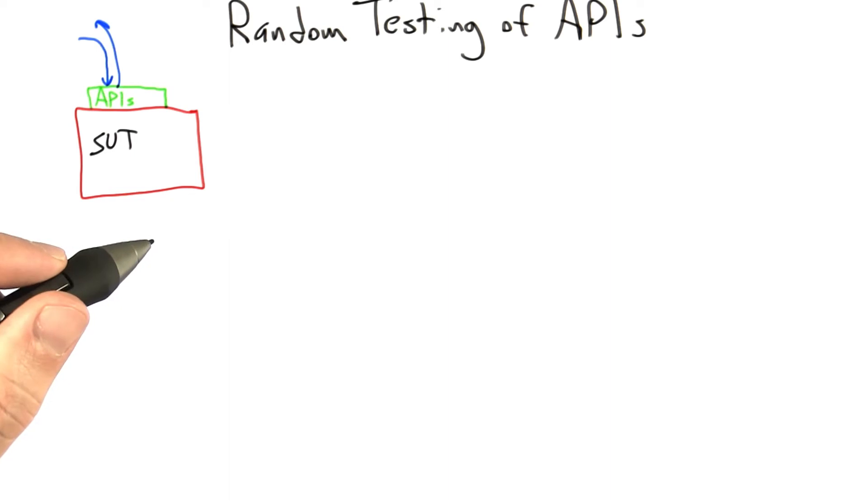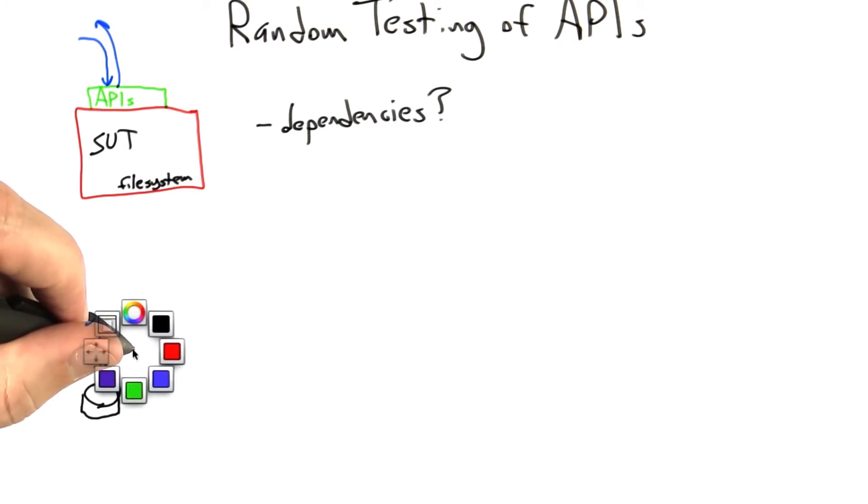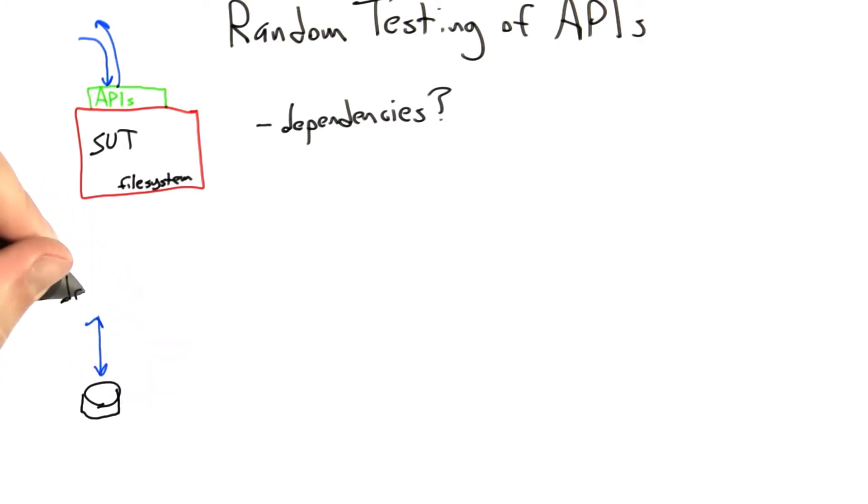The first possibility is that there are dependencies among API calls. This means there might be certain orderings of API calls, perhaps even combined with dependencies on the arguments to those API calls, that are either illegal or undesirable. We're going to need to teach our random tester to avoid those.